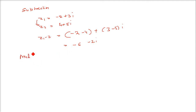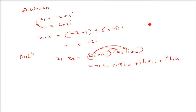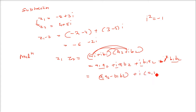For multiplication of complex numbers Z1 = A1 + iB1 and Z2 = A2 + iB2, multiply them out: A1·A2 + iB1·A2 + iA1·B2 + i²·B1·B2. Since i² = −1, we get (A1·A2 − B1·B2) + i·(A1·B2 + B1·A2). This is the multiplication formula, which you can use directly.